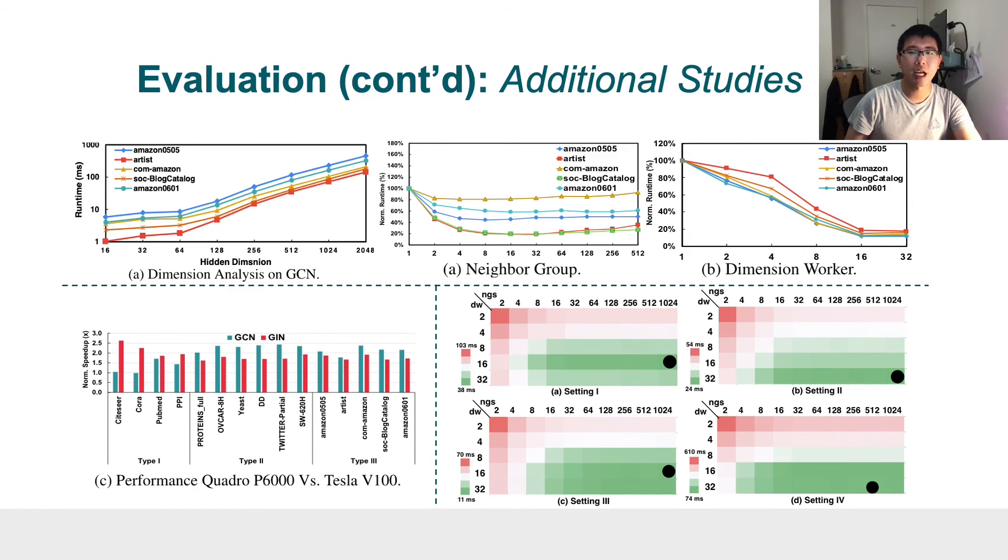Furthermore, we carried out a set of studies for measuring our design effectiveness, including data dimension, workload group, and dimension worker. We also tested our design on more advanced V100 GPU to show our design adaptiveness. Finally, we studied the effectiveness of modeling and parameter tuning under different settings of devices, data, and GNN models.